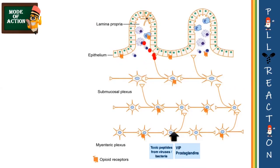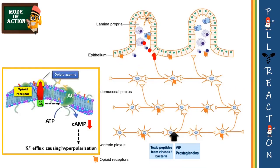The activation of mu receptors prolongs intestinal transit time, allowing maximum resorption of luminal contents within the intestine. Activation of delta receptors reduces intestinal secretion of water and electrolytes. Enkephalins, an opiate neuropeptide, activate delta receptors.